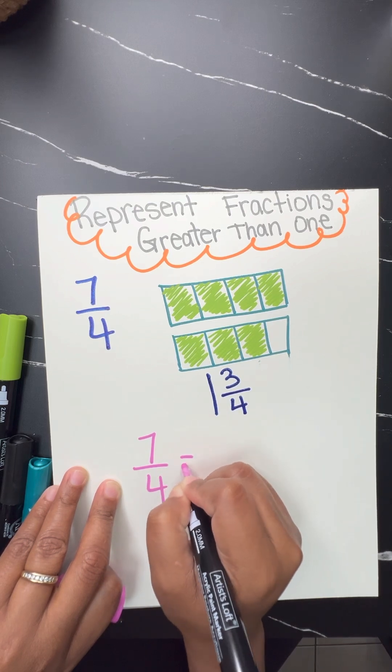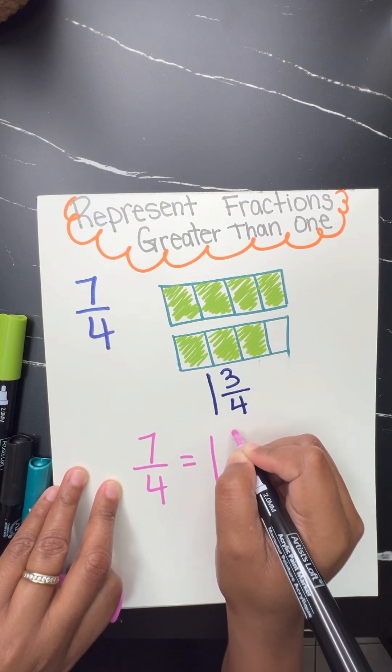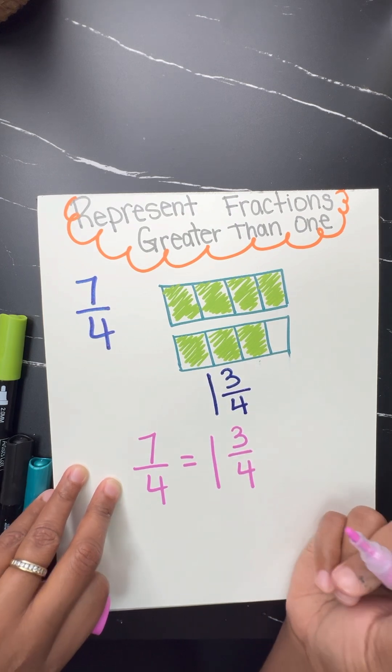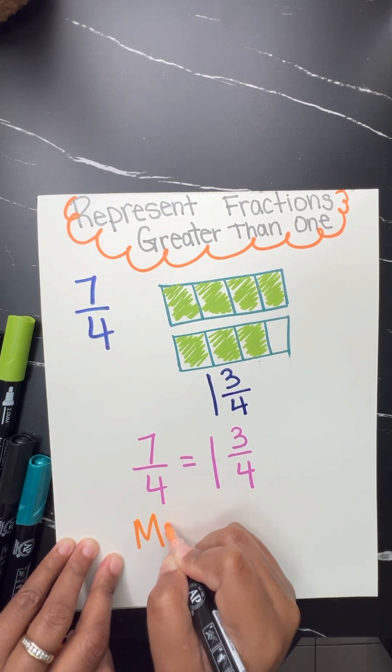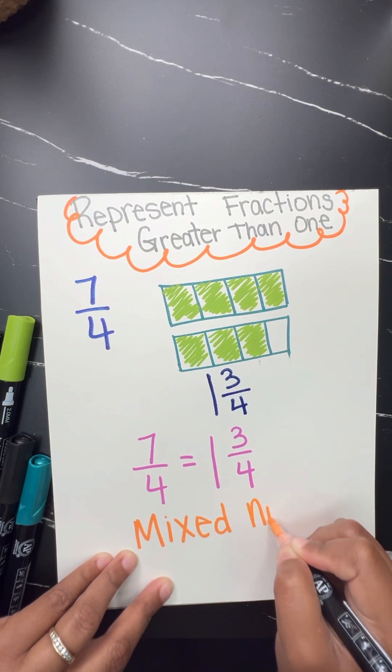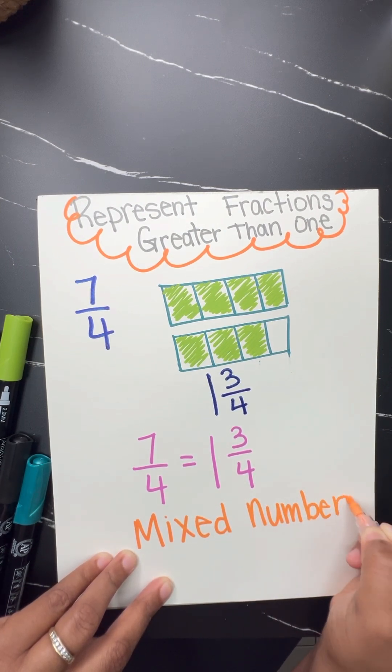So that's where we can represent it as a mixed number by saying 7 fourths is essentially the same as one whole and three over four, or one whole and three fourths.